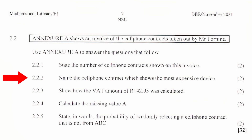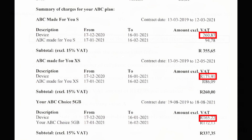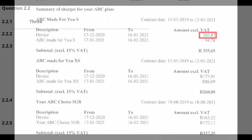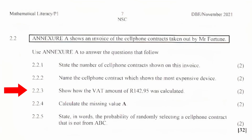Question 2.2.2: Name the cell phone contract which shows the most expensive device. Comparing the cost of the devices shown on Annexure A, we see that the cell phone contract where the most expensive device is ABC Made For Us.